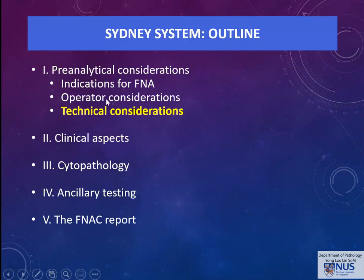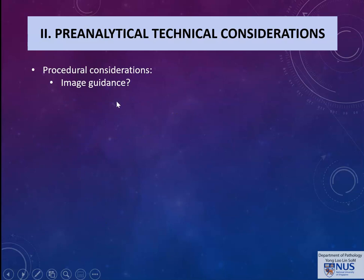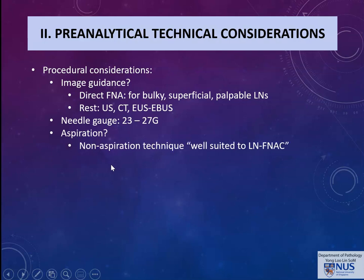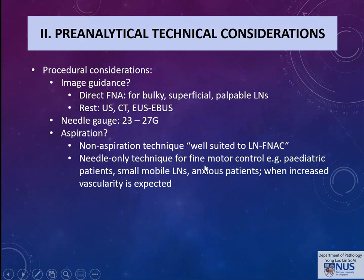The technical considerations cover intra-procedural aspects: direct FNA can still be done for very obviously palpable lymph nodes, but the rest would benefit from image guidance — whether ultrasound, CT, or EBUS-guided FNAs. The optimal needle gauge is 23 to 27 gauge. The non-aspiration technique is well suited to lymph node FNAs; the needle-only technique is especially useful for very fine motor control, for example with small mobile lymph nodes, paediatric patients, or particularly anxious patients. ROSE is recommended.